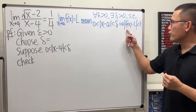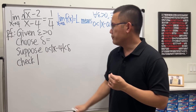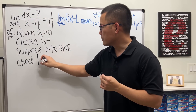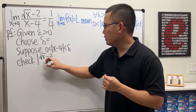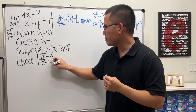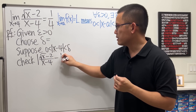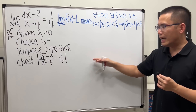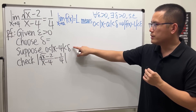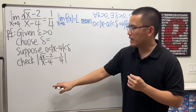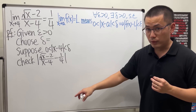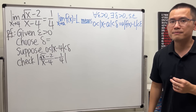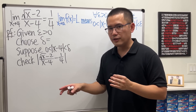To check this inequality, we start by writing down the absolute value of the function minus the limit. The function is (√x − 2)/(x − 4) and the limit is 1/4, so we write down that expression first. Then we do some algebra, use the condition, figure out delta, and hopefully show this is less than epsilon. So now it's just a matter of doing algebra.